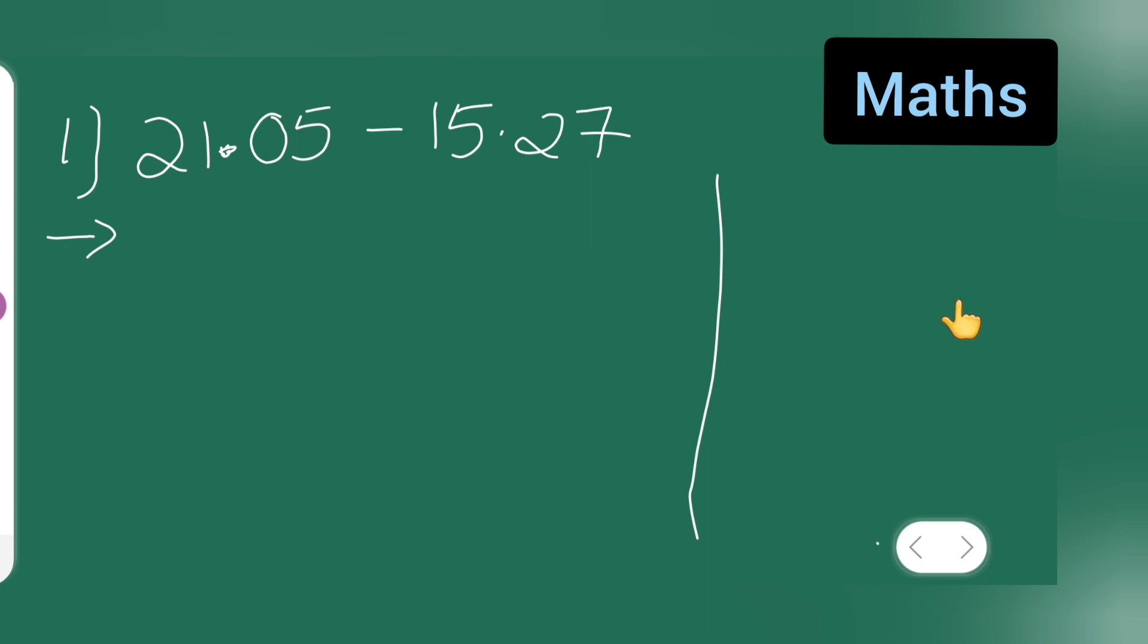What I'll have to do is write this first, that is 21.05 minus 15.27. Write this first number over here, that is 21.05 minus 15.27, right.